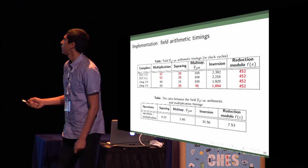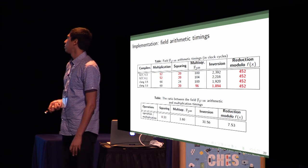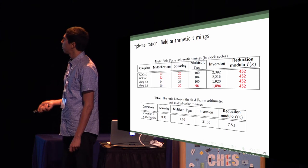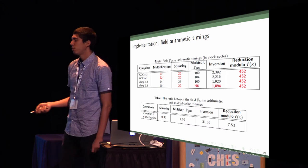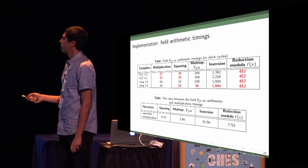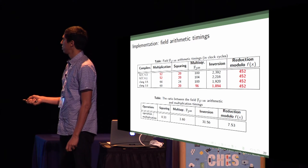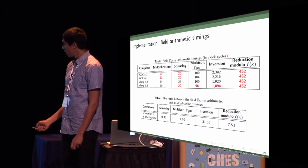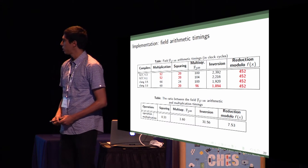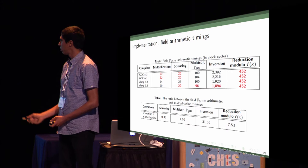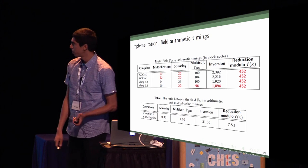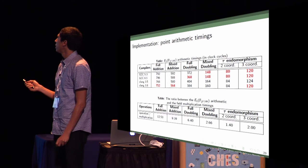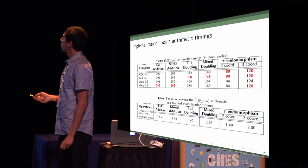This is the timings. We have multiplication in GCC at 52, squaring is about 20, and the inversion here is now very expensive, because we have different strategies to reduce the cost of multiplication. This is the reduction cost. The inversion should be avoided more and more in binary arithmetic, because it's becoming very expensive in software.